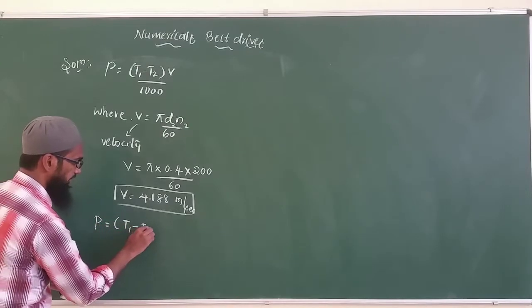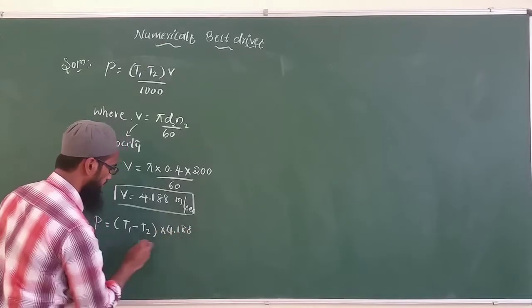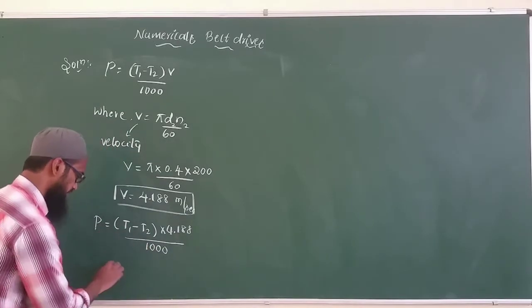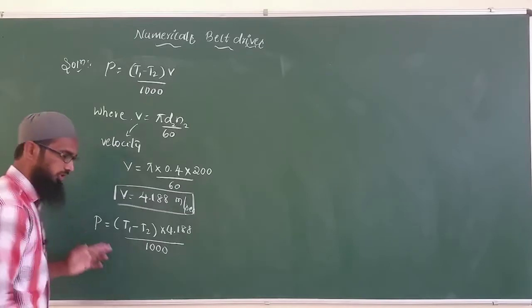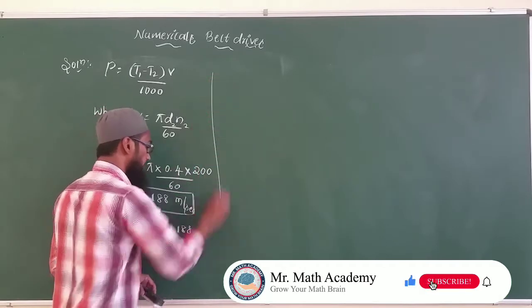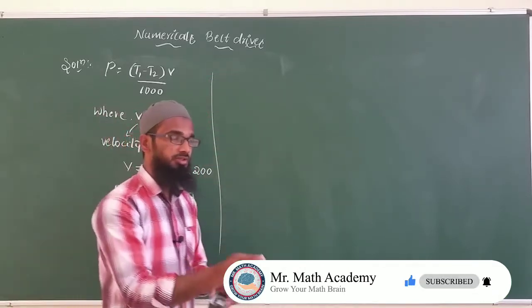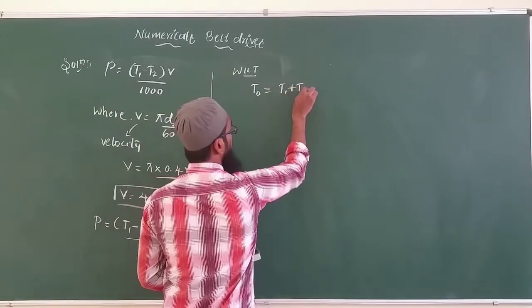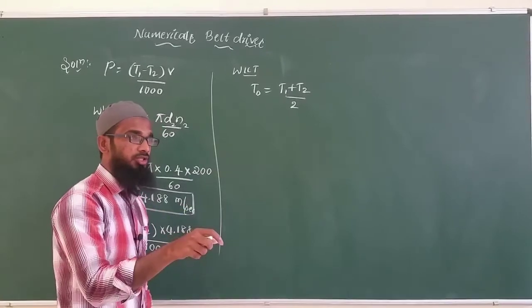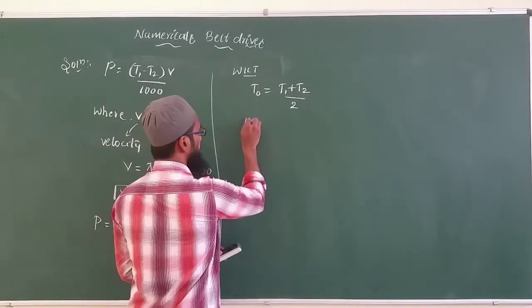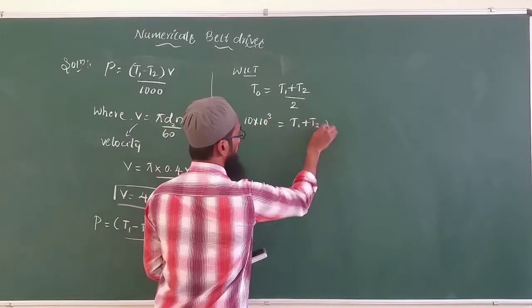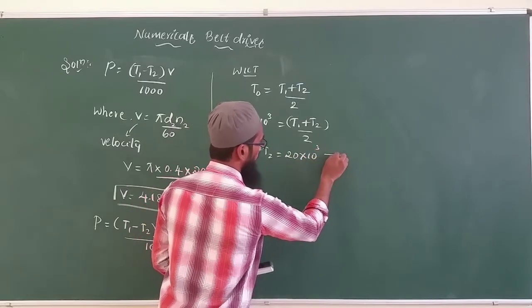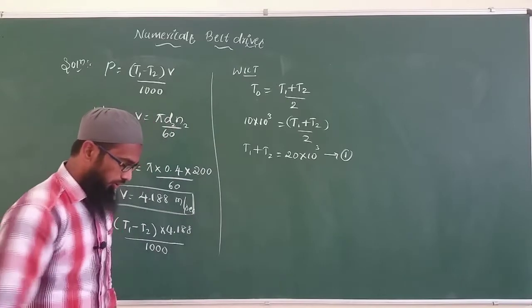Therefore P = (T₁ − T₂) × 4.188 / 1000. Since T₁ and T₂ are unknown, we use the given relations to find them. The initial tension formula is T₀ = (T₁ + T₂) / 2. Since T₀ should not exceed 10 kN, we set 10 × 10³ = (T₁ + T₂) / 2, and cross-multiplying gives T₁ + T₂ = 20,000 N — this is Equation 1.